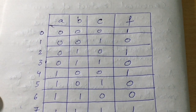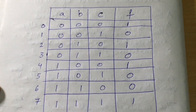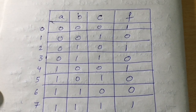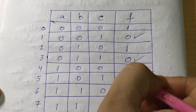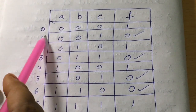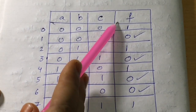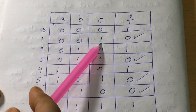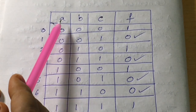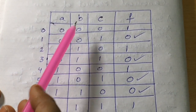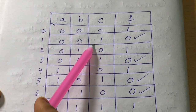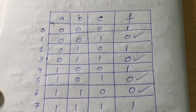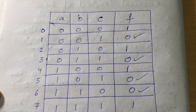For max terms, we look at the values of f where it is 0. The rows where f = 0 are rows 1, 3, 5, and 6. For row 1, A=0, B=0, C=1: where the variable is 0 we write it as-is (A, B), and where the variable is 1 we write it in complemented form (C̄), then write it in sum form: A + B + C̄.